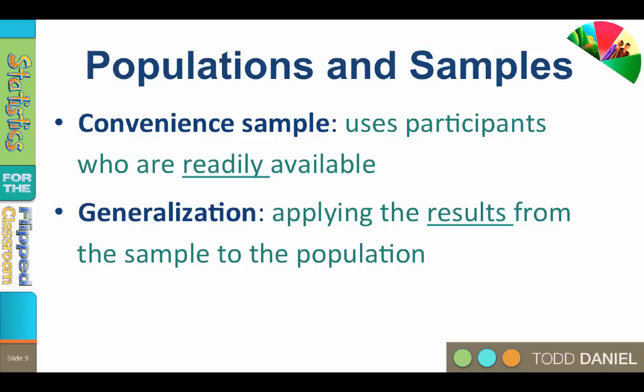The convenience sample uses participants who are readily available. This is not necessarily a bad practice, but we should be honest with ourselves about what we are doing. Before we begin generalizing the results from our convenience sample to the population, we should replicate the same study at other universities with other college students to see if others find the same results. Most research in the behavioral sciences is done using convenience samples.